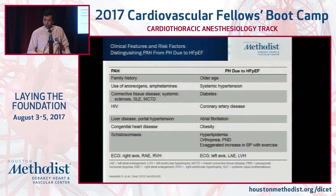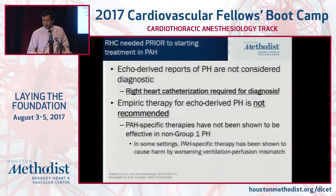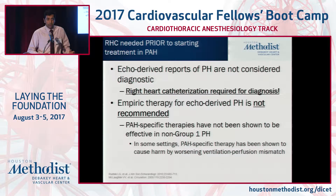What are the things you need to look for on history? You need to look at all the risk factors so that you can classify patients appropriately into different groups of pulmonary hypertension. Echo-derived reports of PH are not considered diagnostic — right heart catheterization is really required for diagnosis. As cardiologists, this falls into our realm, and we should consider doing a right heart cath in patients with unexplained dyspnea. Treating patients based on echo alone is not recommended.